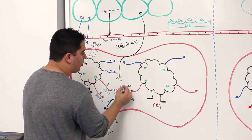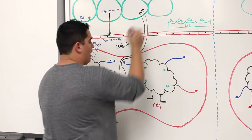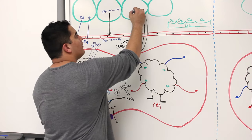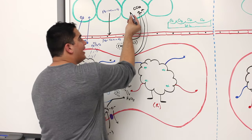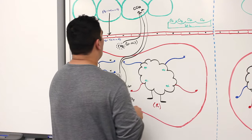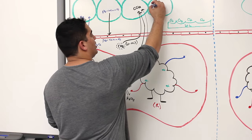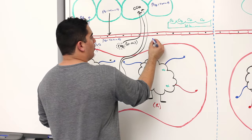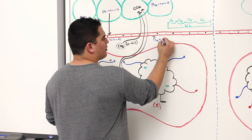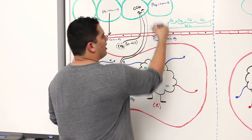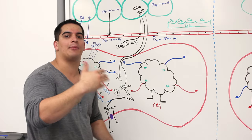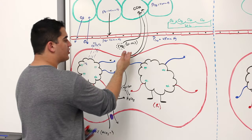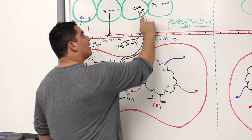The CO2 from bicarbonate, the CO2 from carbaminohemoglobin, and the 2–10% dissolved in plasma all move from blood into the alveoli. The partial pressure of CO2 in the alveoli is about 40 mmHg and in the blood about 45–46 mmHg. Though the gradient is small, CO2 is 20 times more soluble in plasma and alveolar fluid, so it easily moves.